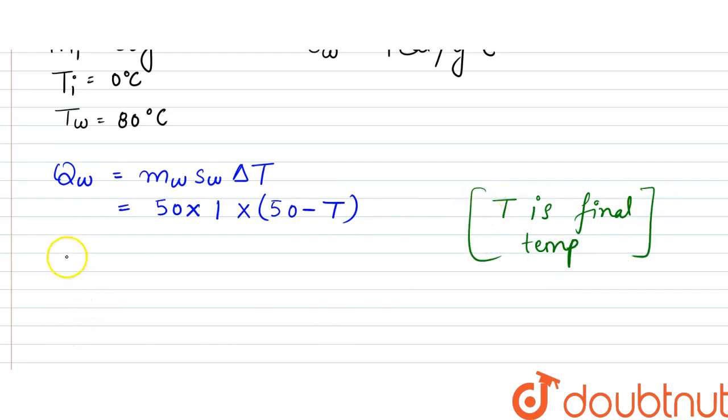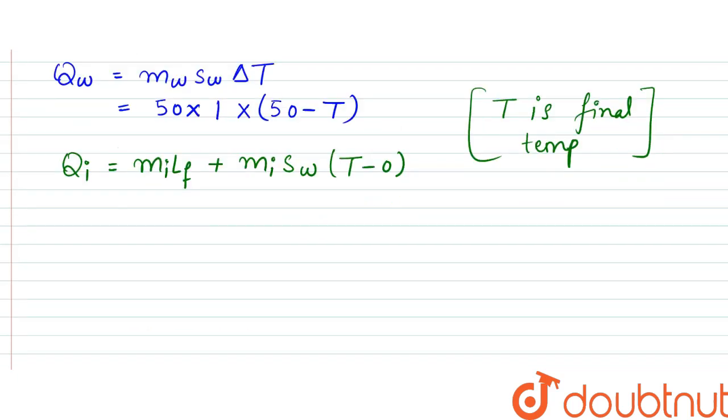And Q of ice now is equal to m of ice times latent heat of fusion plus m of ice times sw times (T minus 0).